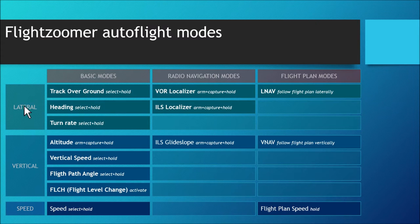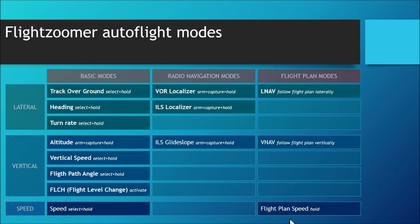On this slide we can see an overview of the 14 new autopilot modes by FlightZoomer. On the left-hand side we see three channels: one supports lateral movement, another deals with vertical modes, and the third covers speed modes. Horizontally we have three groups: basic modes, radio navigation modes, and flight plan modes.